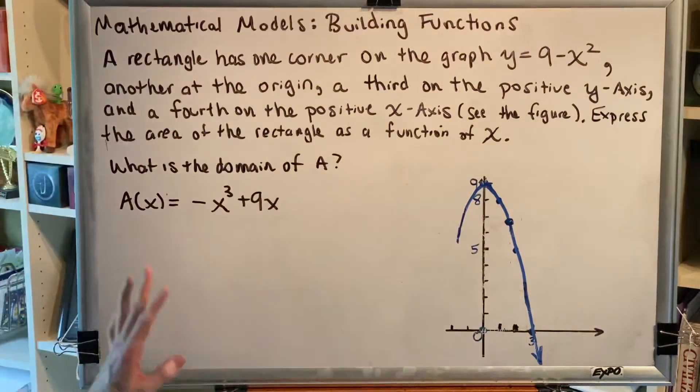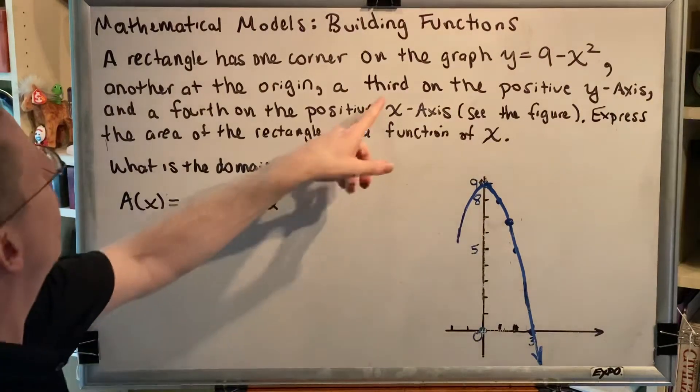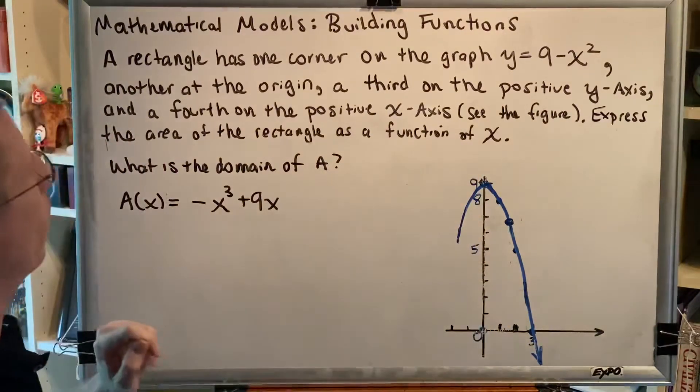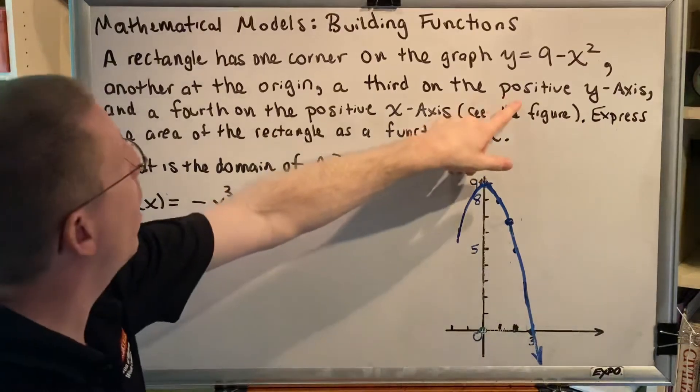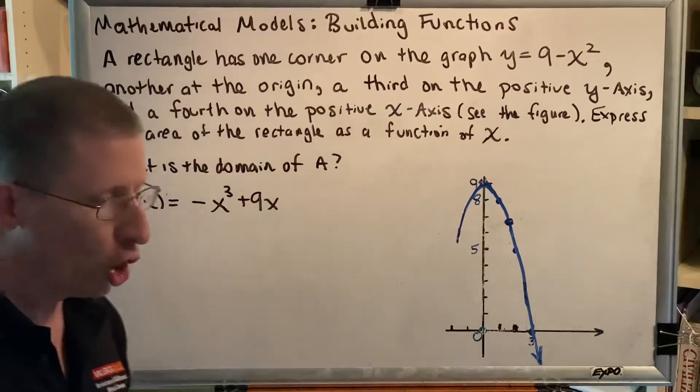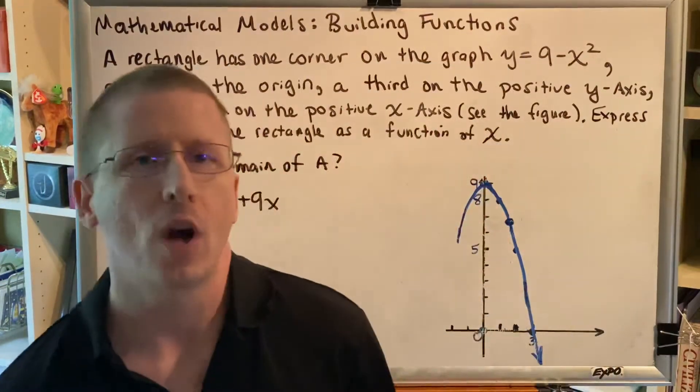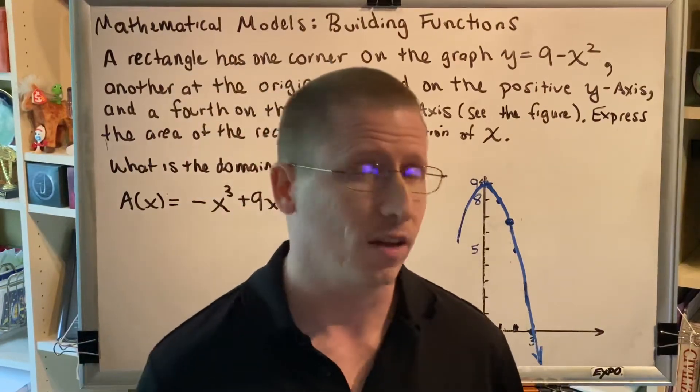There is an additional restriction that is given to us in the instructions of the problem. It says that the first point of our rectangle must be somewhere on our blue parabola, the second point must be the origin, the third must be on the positive y-axis, and the fourth must be on the positive x-axis. So what we're going to do in this video is we're going to look at some possible rectangles and we're going to draw some conclusions about which ones are acceptable and which ones are not acceptable.